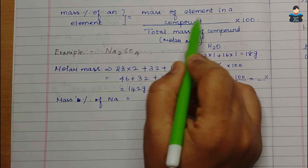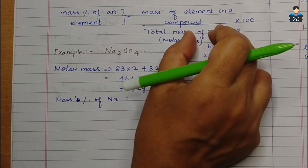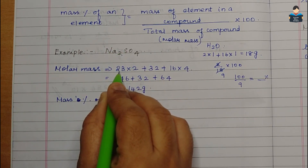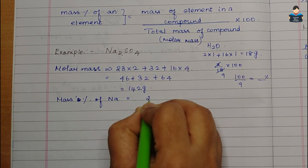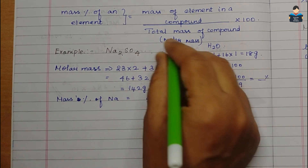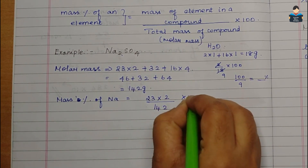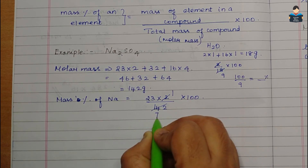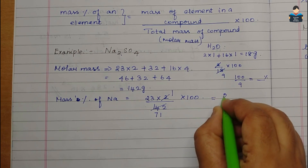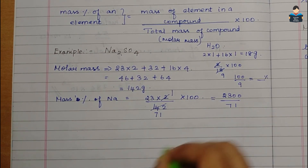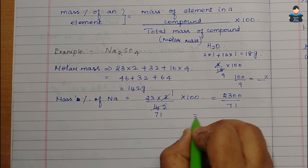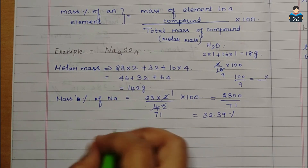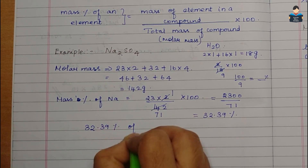Now let's find the mass percentage of sodium. Mass of sodium in the compound: atomic mass 23 × 2 = 46. So mass percentage of sodium = 46/142 × 100 = 2300/71 ≈ 32.39%. So sodium is 32.39% in sodium sulfate.